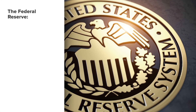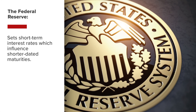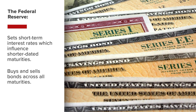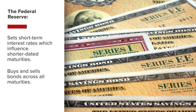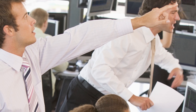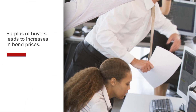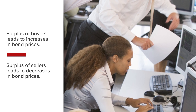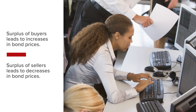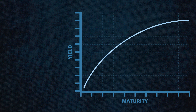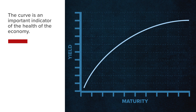The yield curve is influenced highly by the Federal Reserve, the American Central Bank. It sets short-term interest rates in the U.S., which influence the shorter-dated maturities. It also buys and sells bonds across all maturities, influencing yields across the curve. Market participants also influence the yield curve as a surplus of buyers would lead to increases in bond prices while a surplus of sellers would lead to decreases in bond prices. Bond prices move inversely to yields.